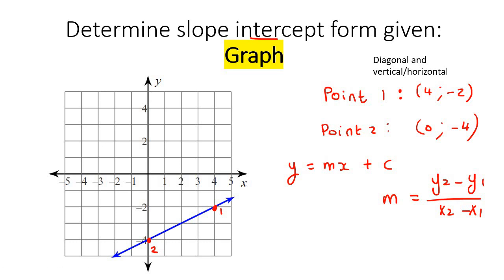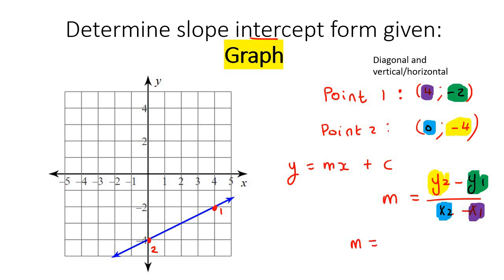So the y value for point 2 goes there, the y value for point 1 goes there, the x value for point 2 goes there, and the x value for point 1 goes there. We fill that in: negative 4 minus negative 2, over 0 minus 4. You type that into your calculator and that gives you one half. So the gradient or slope is one half.